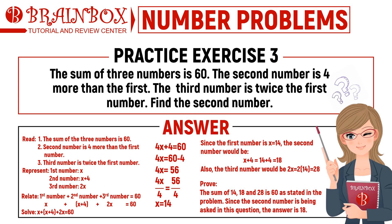From here we get x equals 14. Since the first number is x equals 14, the second number is x plus 4 equals 14 plus 4 equals 18. The third number is 2x equals 2 times 14 equals 28. Prove: the sum of 14, 18, and 28 is 60, as stated in the problem. Since the second number is being asked, the answer is 18.